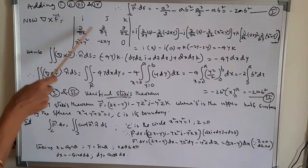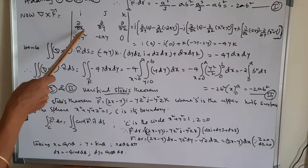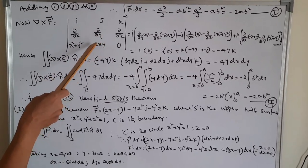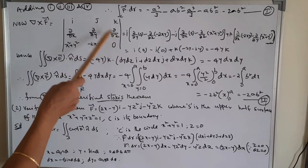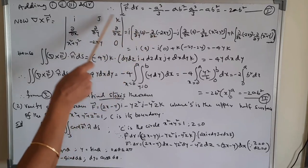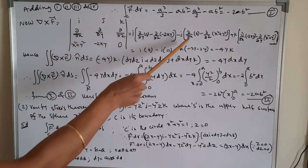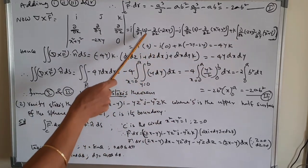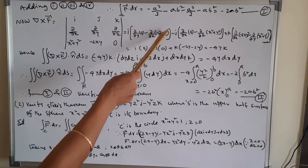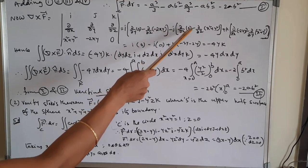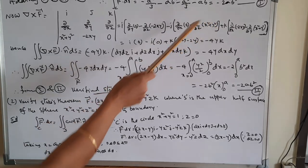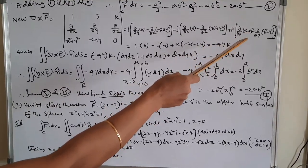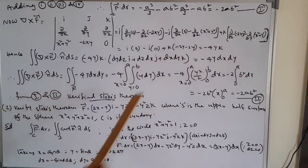Next, compute del × F̄. Setting up the determinant with i, j, k; ∂/∂x, ∂/∂y, ∂/∂z; and F̄ coefficients (x²+y²), −2xy, 0. Expanding: the i and j components give 0 (no z terms and no z components). For the k component: ∂/∂x(−2xy) − ∂/∂y(x²+y²) = −2y − 2y = −4y. Hence del × F̄ = −4y k.